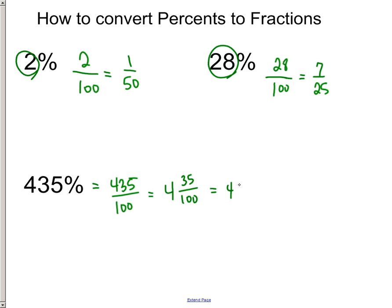In this case, both of them would be divided by 5, so it equals 4 and 7 20ths.